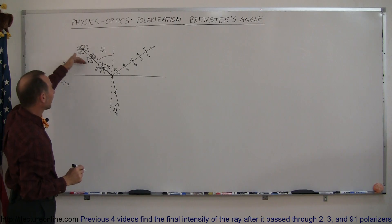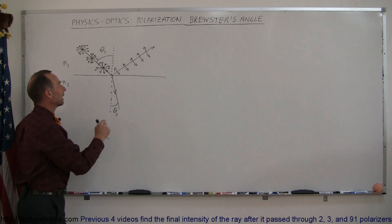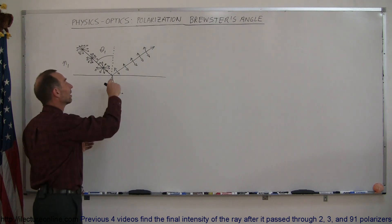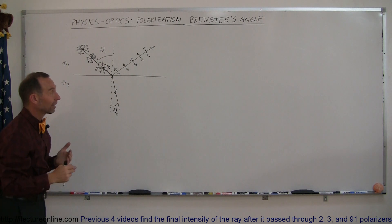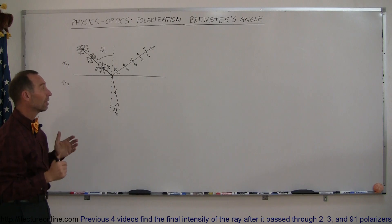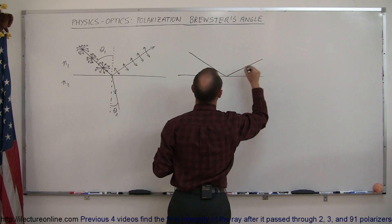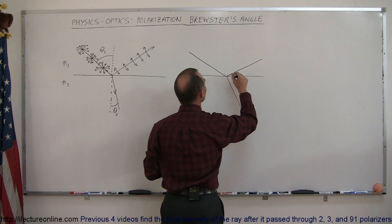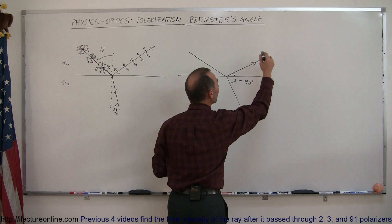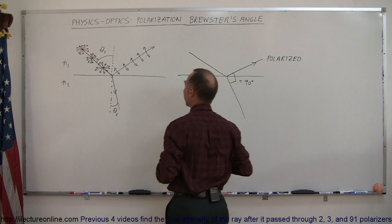It turns out that if the light, which is unpolarized as it approaches the boundary, gets reflected in such a way that the angle between the reflected and the refracted ray is equal to 90 degrees, then the light that gets reflected will be completely polarized — just like as if it went through a polarizer. If the light comes in at just the right angle so that the refracted ray makes a 90-degree angle with the reflected ray, then the reflected light is polarized. Quite an interesting phenomenon.